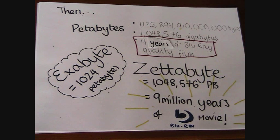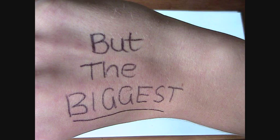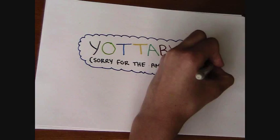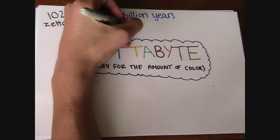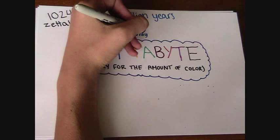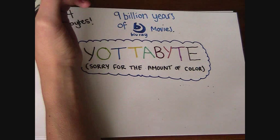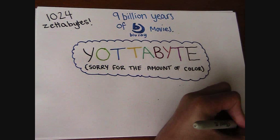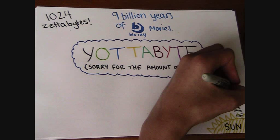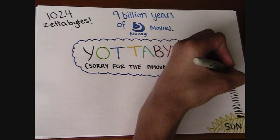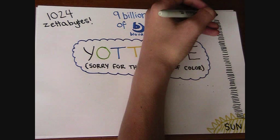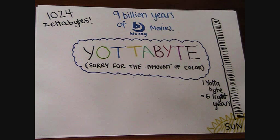But we can get bigger one more time. A yottabyte is equivalent to 1,024 zettabytes and could hold 9 billion years of Blu-ray quality video. Talking in pages of plain text, it's also a lot — if we stack the amount of paper needed, the stack would be 6 light years high.